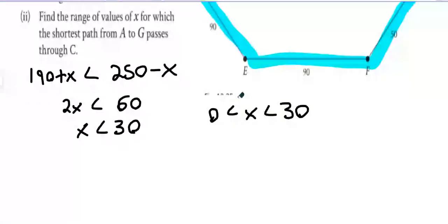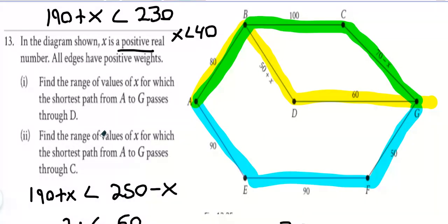Find the range of values for which the shortest path from A to G passes through C. C is the green route. So what do we want to be the shortest route this time? We want the shortest route to be 250 take away x.